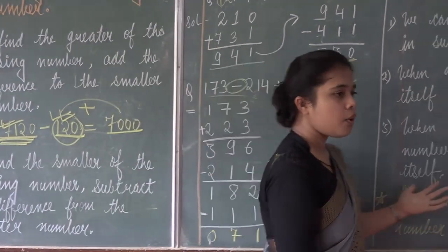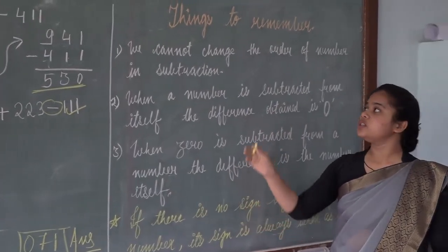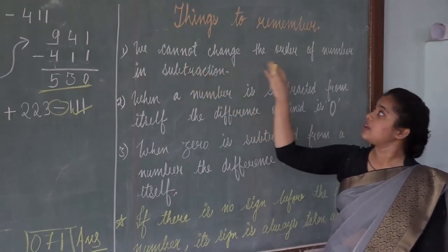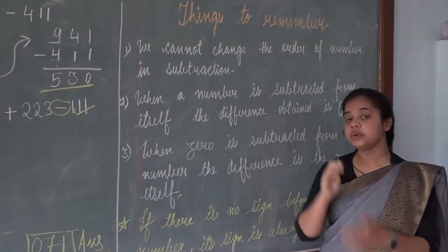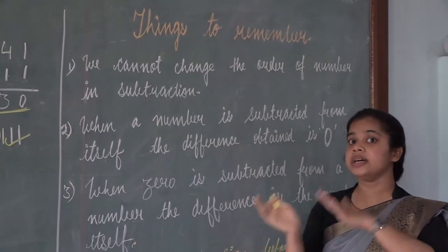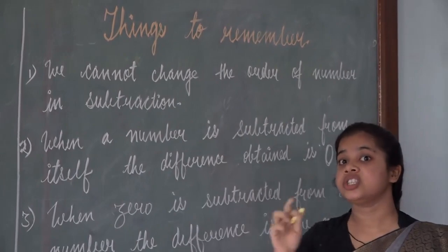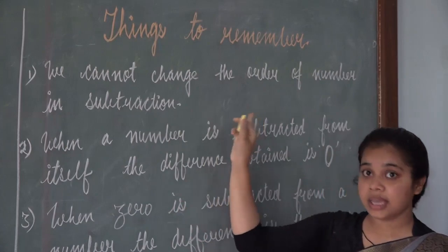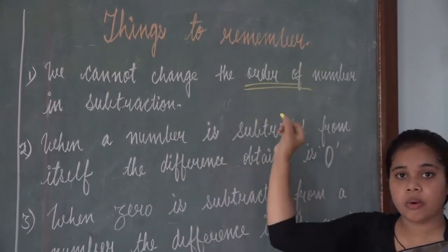Let us move on to things to remember. We cannot change the order of numbers in subtraction, because we always subtract a smaller number from the greater one. Whereas in addition, we can change the order of numbers, which is known as the order property. But in subtraction, we cannot change the order.